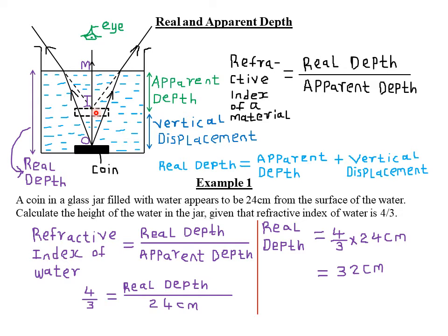The distance from our apparent image to the surface of water where our eye is — that is, viewing that particular coin normally — the distance from the eye or at the top of this particular liquid, which is water, to the position where our apparent image is, that distance we call the apparent depth. The apparent depth is the distance from the surface of the water where our eye is to the location of our apparent image.